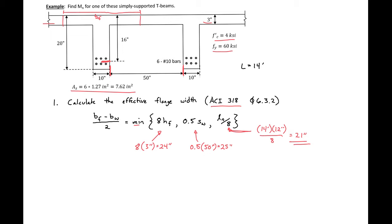So this is the value that we're going to calculate our BF with. Substituting in we'll have our BF is equal to 2 times 21 inches plus our BW which is 10 inches. This is going to give us our BF equal to 52 inches. So this is the value that we're going to use in the following steps of this example.